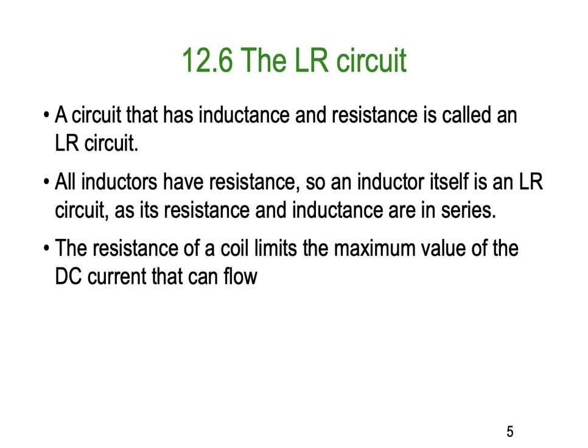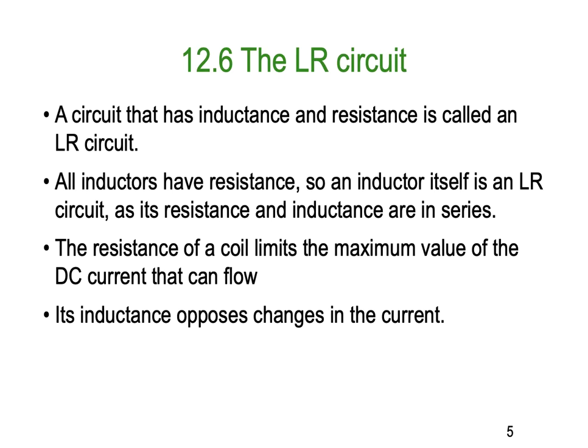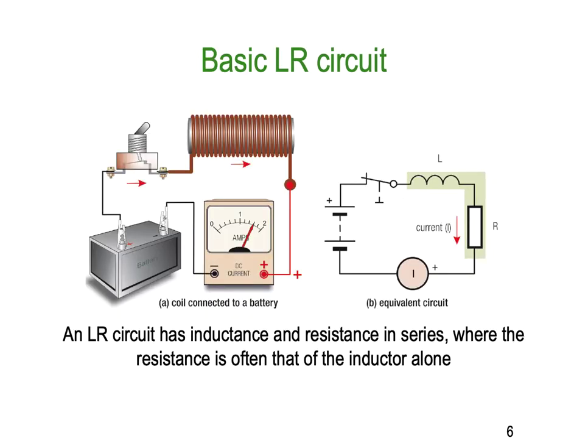The resistance of a coil limits the maximum value of the DC current that can flow — that's the resistance, not the inductance. The inductance opposes changes to the current (Lenz's law), but only while the magnetic field is building up or collapsing. In a DC RL circuit, we only have magnetic field effects as it builds up and as it turns off.